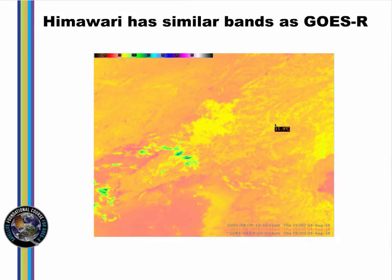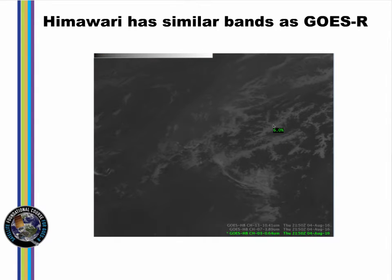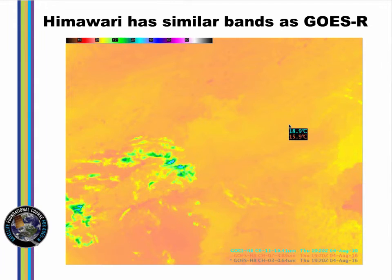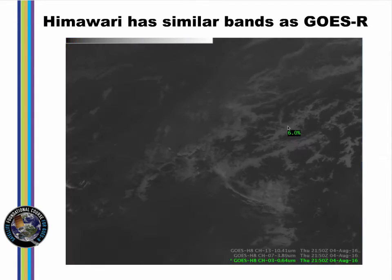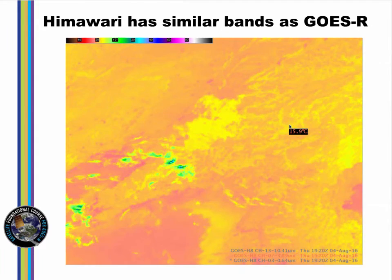Those differences can be used to highlight low clouds, fog and stratus. The difference field between those two infrared channels would show signatures similar to this visible image from shortly after sunrise that confirms the presence of clouds in the valleys. But do those clouds extend to the ground? That's a difficult thing to determine from satellite data.